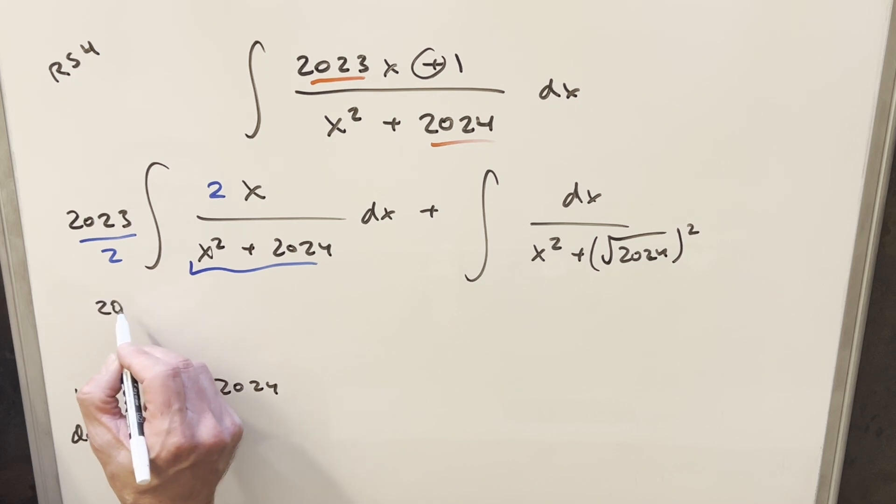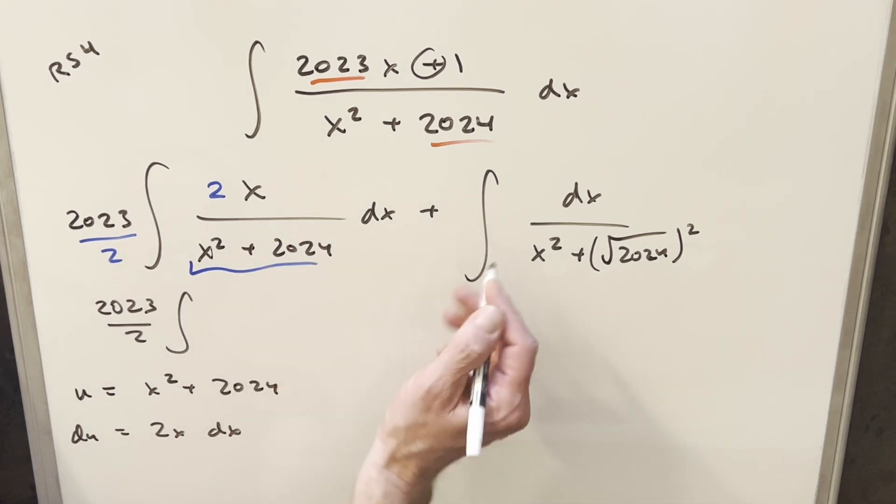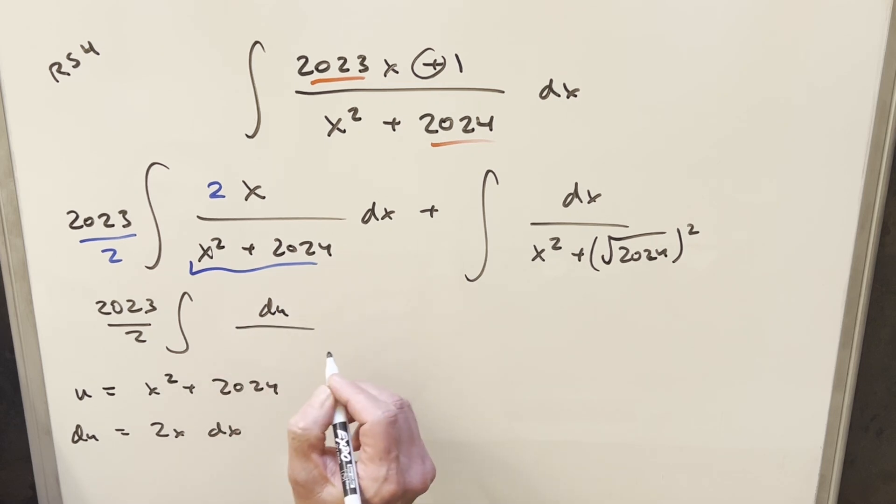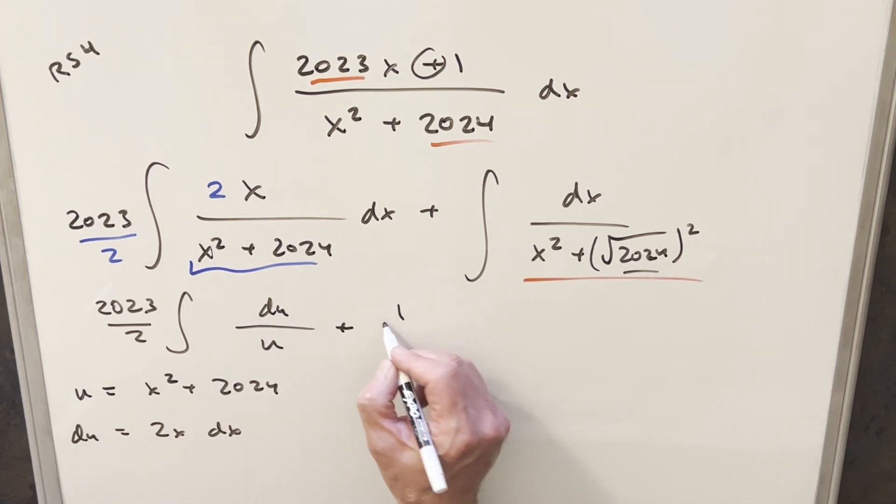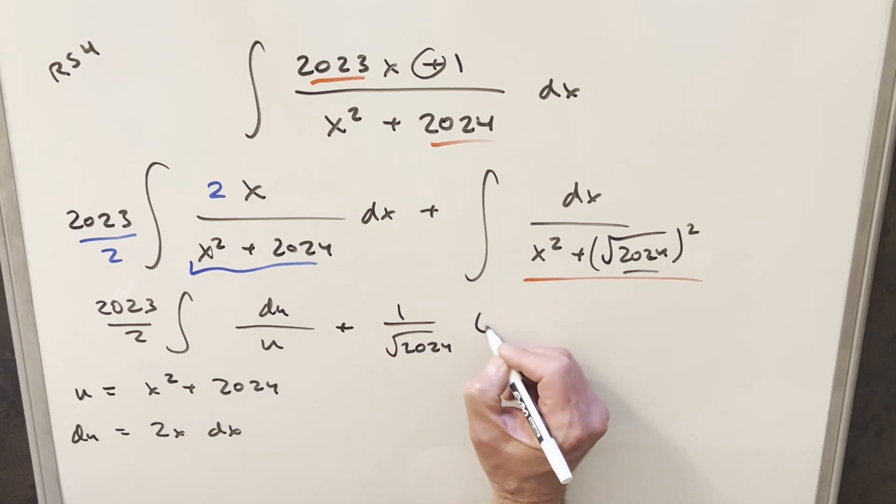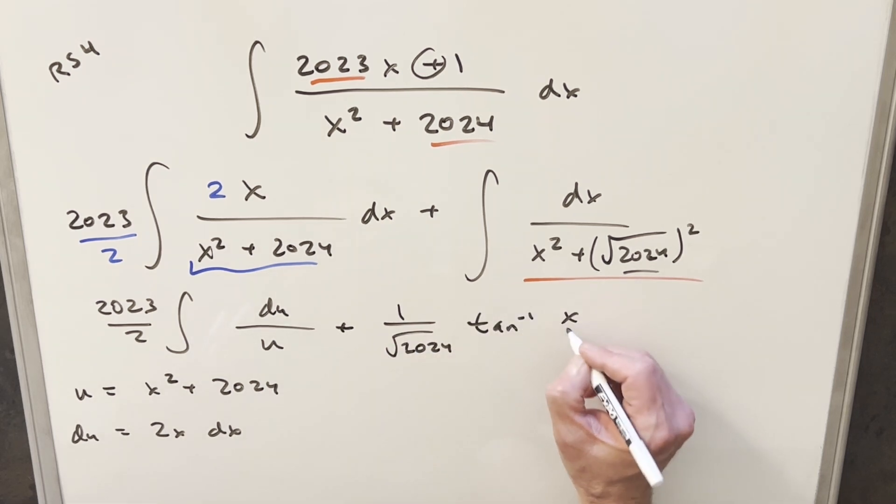So I'll go ahead and substitute here. We have 2023 over 2. Then this is going to transform. This is just going to be du over u. So then using our Arctan formula, we're going to have 1 over this value, which is square root of 2024 Arctan of x over again, square root of 2024.